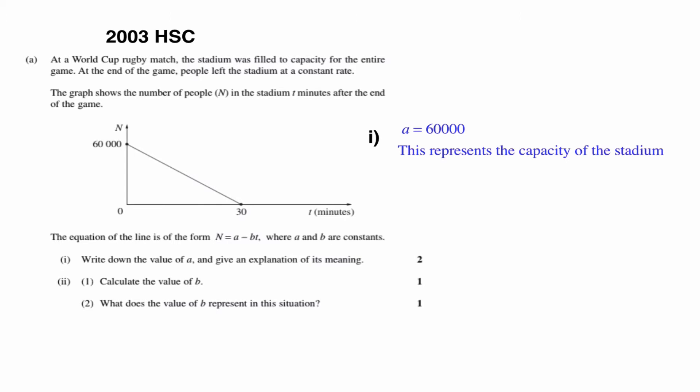Question two says calculate the value of b. Well, bt, so b would be the gradient of our line. So if we think about how we calculate the gradient of a line, rise over run, we can see quite easily that b would be 60,000 divided by 30, which is 2,000. And it's negative in the expression because the stadium's emptying. And part two of question part two is what does this value represent? And it represents the rate at which people are leaving the stadium.